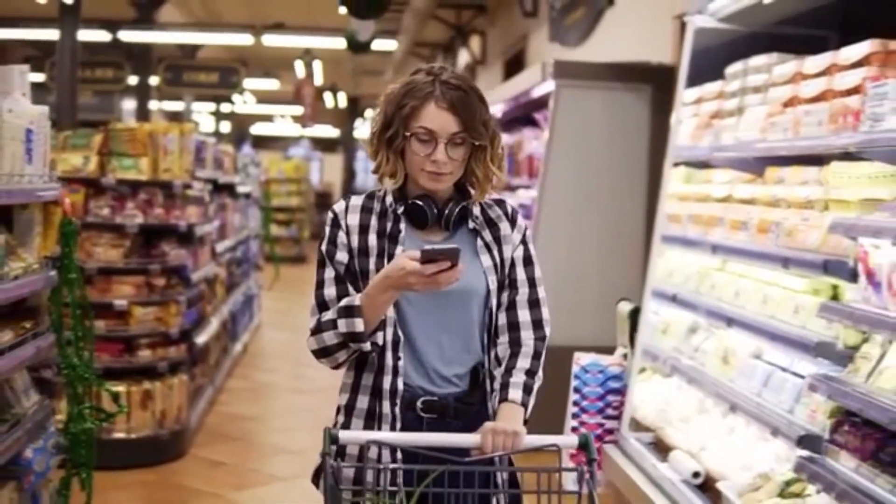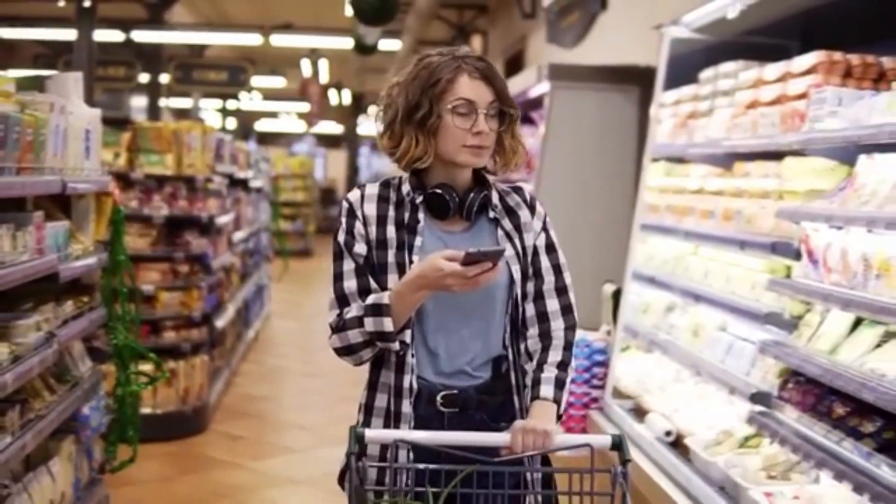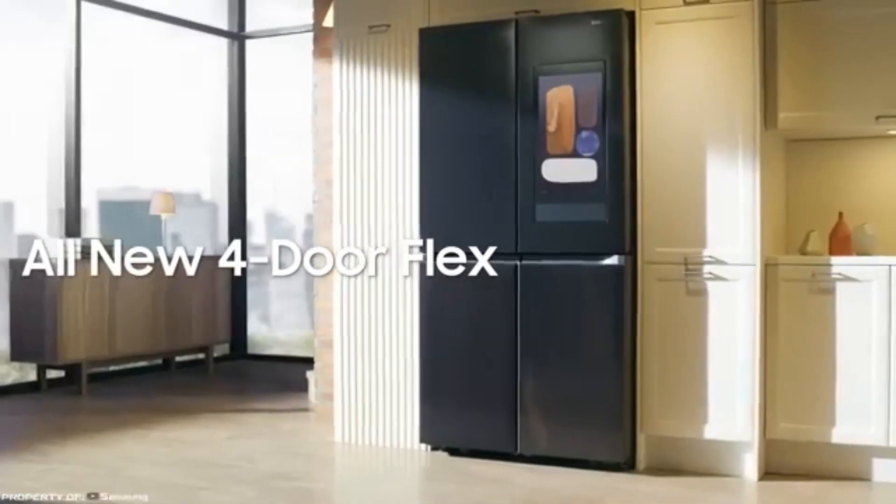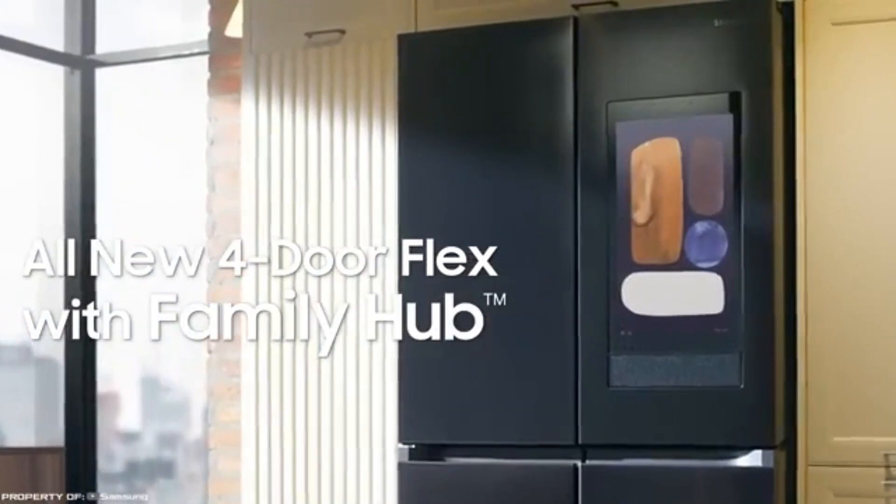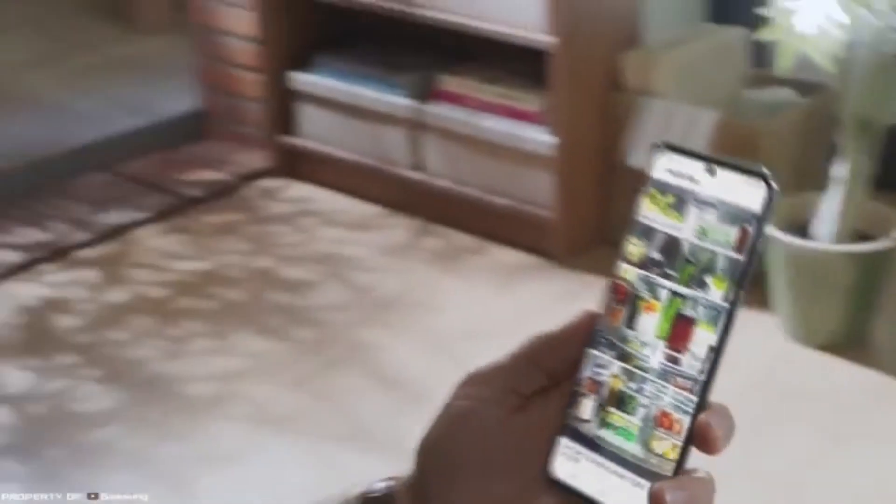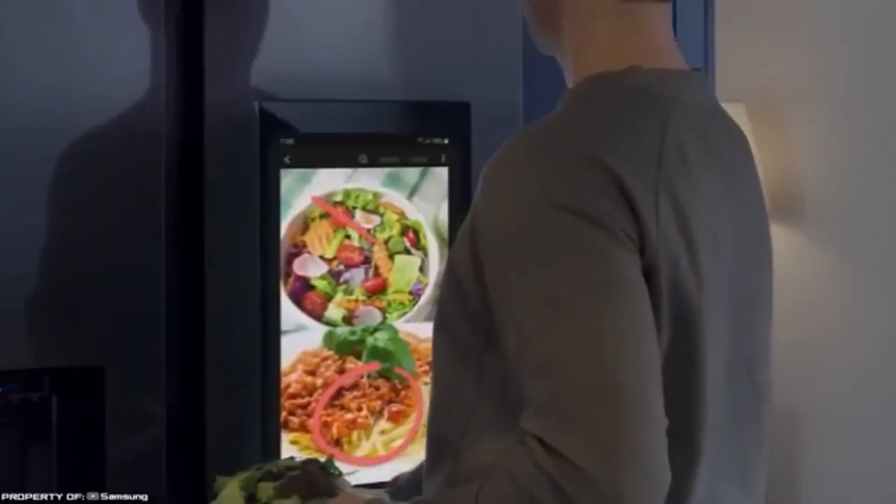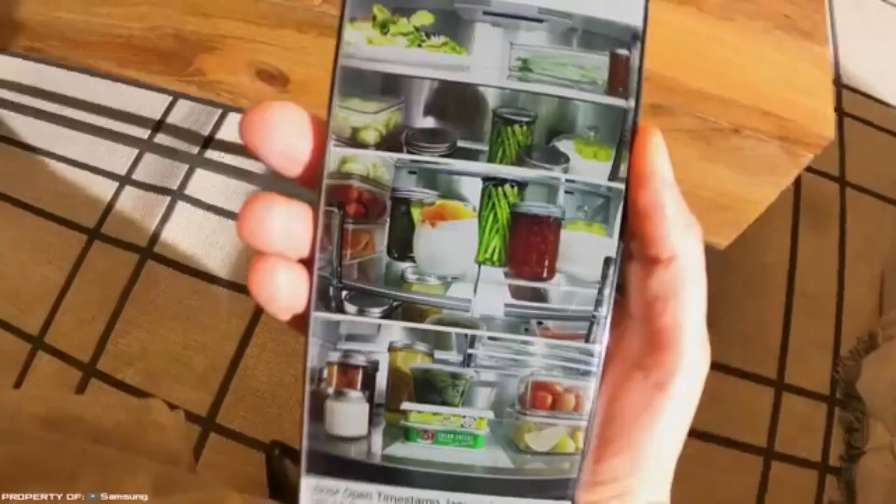Samsung Family Hub. Constantly forgetting what products to buy in the store or not knowing what to cook for dinner? Then the Samsung Family Hub refrigerator with AI is made just for you. The gadget is equipped with cameras and takes photos of its contents every time the door is closed. These images are uploaded to the cloud, allowing you to view them from your smartphone.